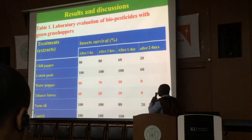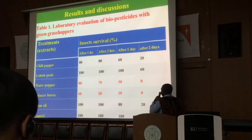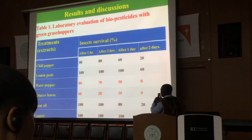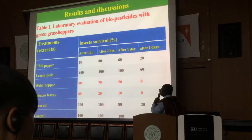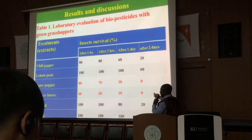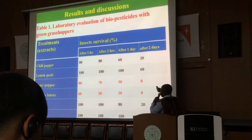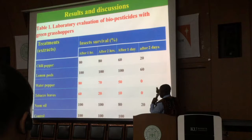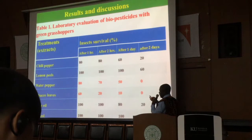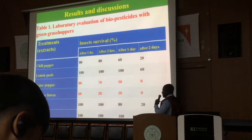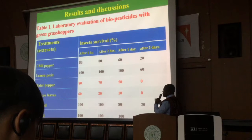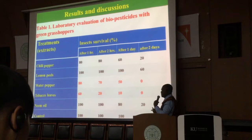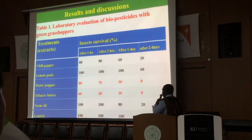In the laboratory screening evaluation of bio-pesticides, water pepper and tobacco leaves performed best: after treating insects with these substances for two days, all of the insects in the cages treated with water pepper and tobacco died. However, 20 percent of insects were still remaining in cages treated with chili and neem oil, while 60 percent remained in the cage treated with lemon peel extract. On the control cage where no insecticide was applied, all insects survived, confirming that the plant extracts have insecticidal effects.